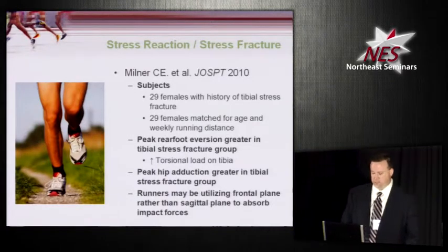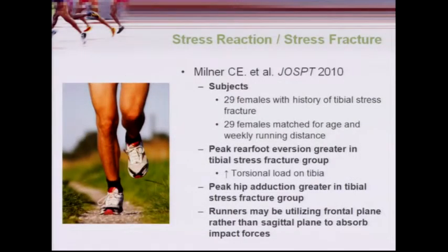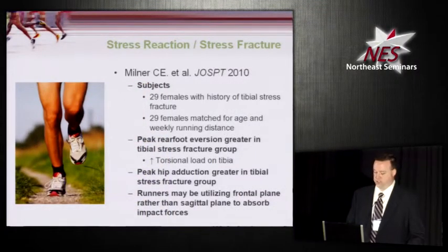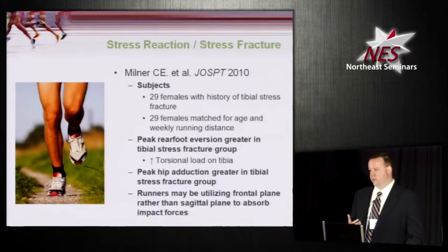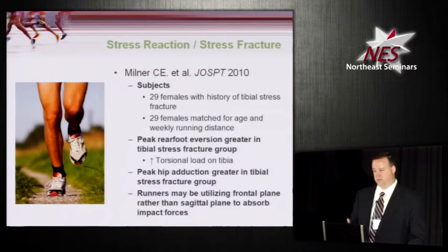A study looked at 29 women with a history of tibial stress fracture matched with 29 healthy controls for age and weekly running distance. Peak rear foot eversion was greater in the tibial stress fracture group, thought to place greater torsional load on the tibia. Peak hip adduction was also greater in that group, showing both distal and proximal influences. The thinking was that these runners were utilizing frontal plane rather than sagittal plane mechanics to absorb impact forces. This study highlights that hip mechanics and hip weakness — often discussed in relation to the knee — can impact things more distally, including stress fractures and issues around the foot.